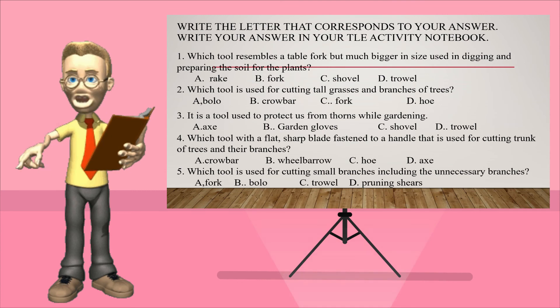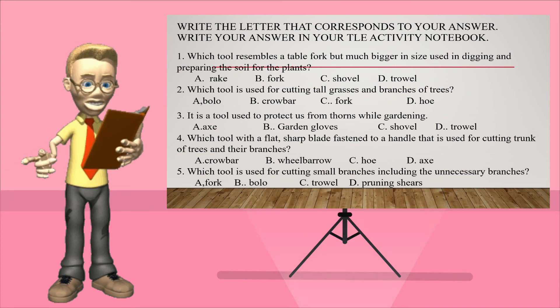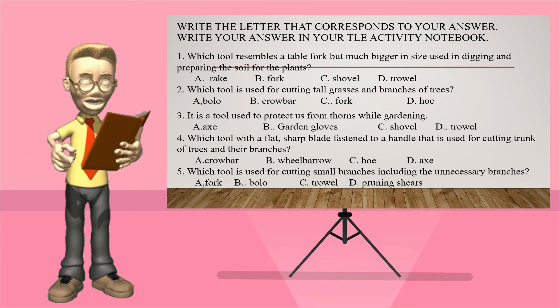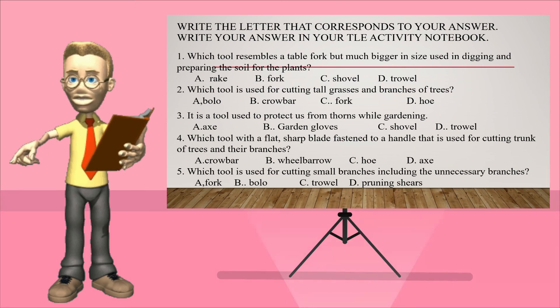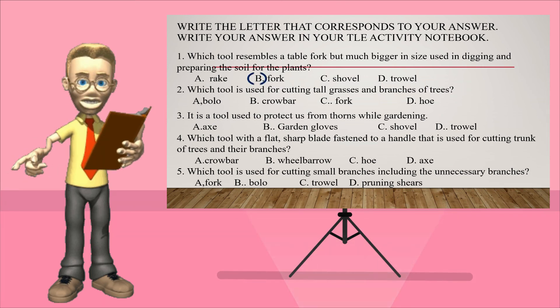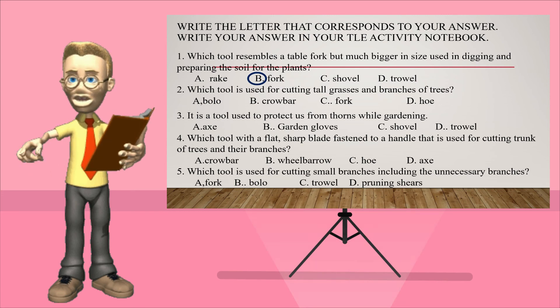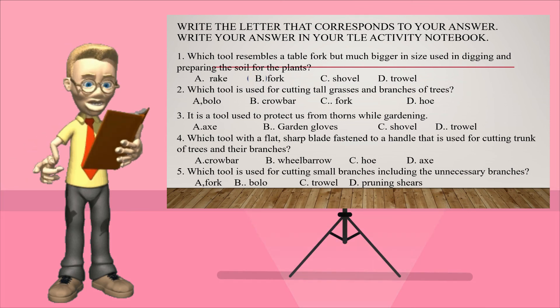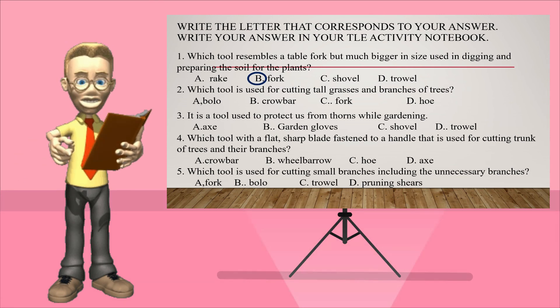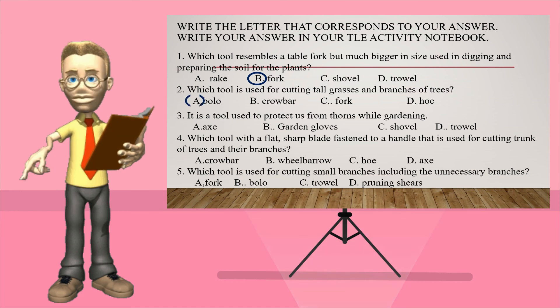This time you are going to write a letter that corresponds to your answers. Write your answer in your TLE activity notebook. Number one, which tool resembles a table fork but much bigger in size used in digging and preparing the soil for the plants? The correct answer is fork. Very good. Number two, which tool is used for cutting tall branches and branches of trees? What is the correct tool? The answer is bolo. Next, it is a tool used to protect your hands from thorns while gardening. The correct tool is garden gloves.